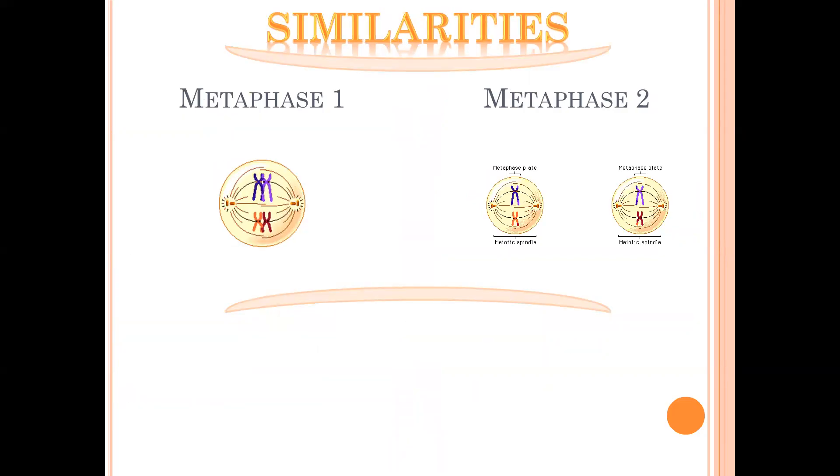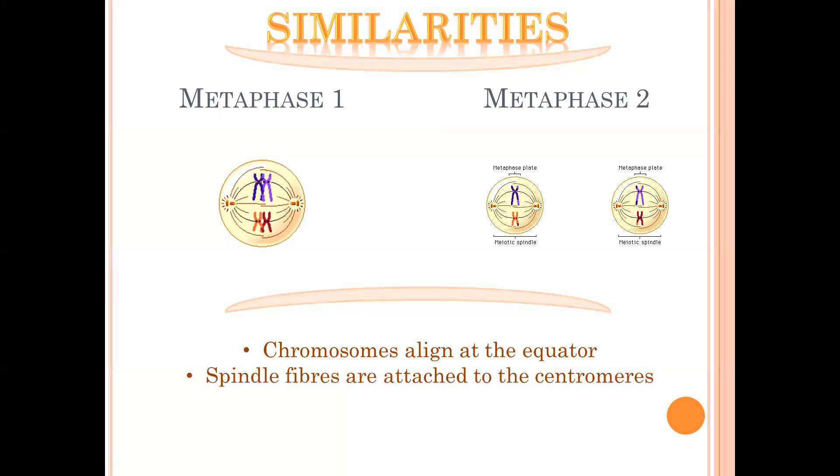When we compare metaphase I with metaphase II, we know M for metaphase is also M for muddle. So the chromosomes are arranged or aligned at the equator of the cell. Spindle fibers are attached to the centromeres of the chromosomes, and we have the process of random arrangement also occurring in both metaphase I and metaphase II.